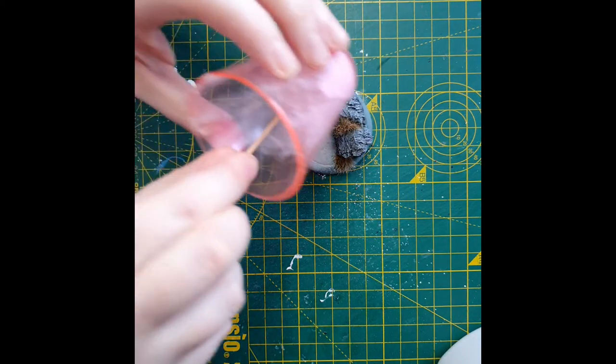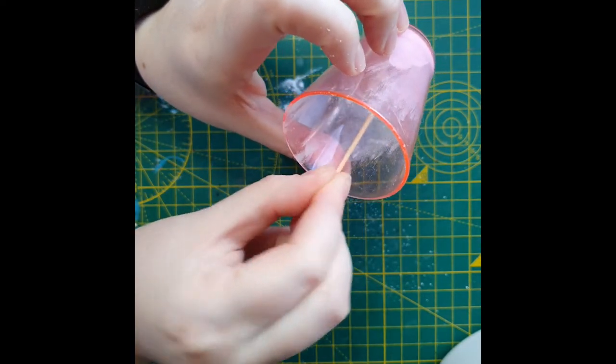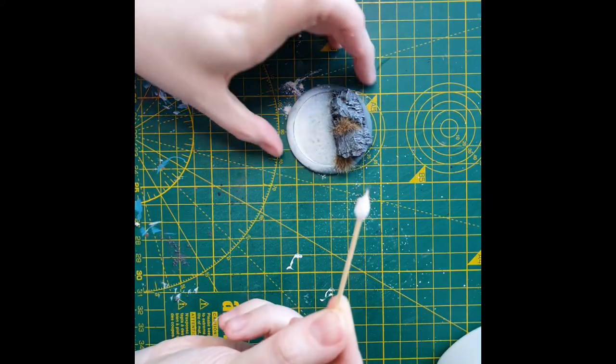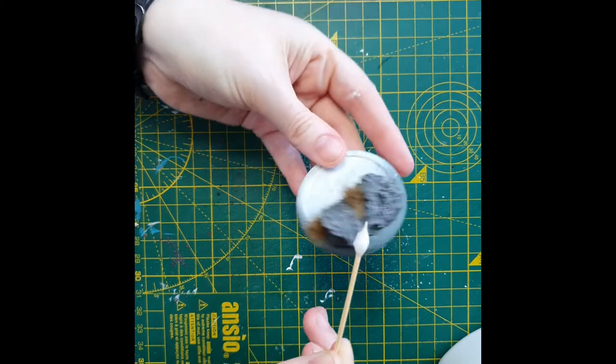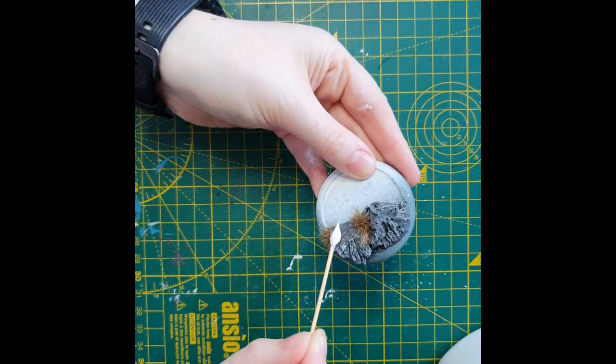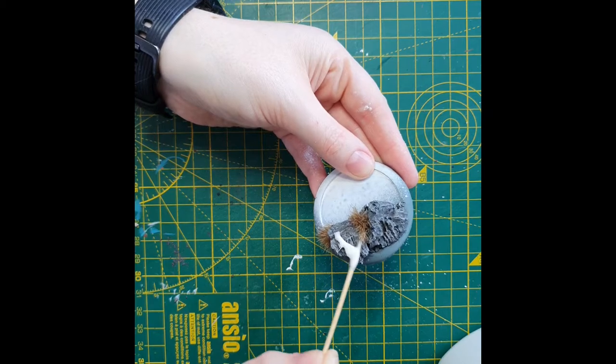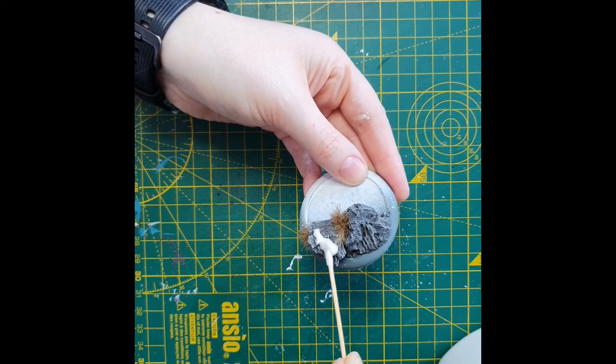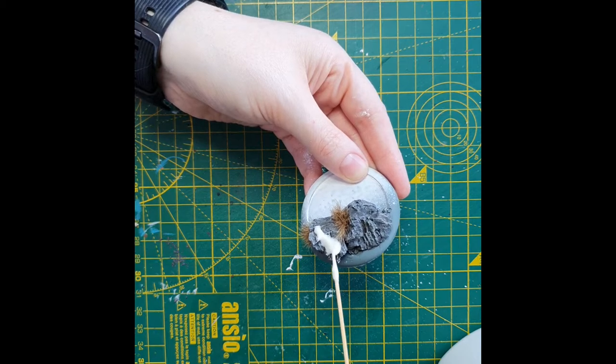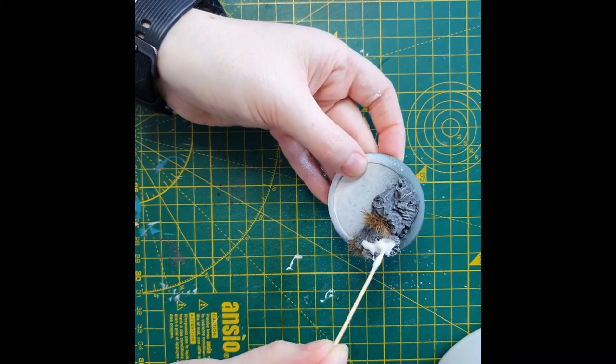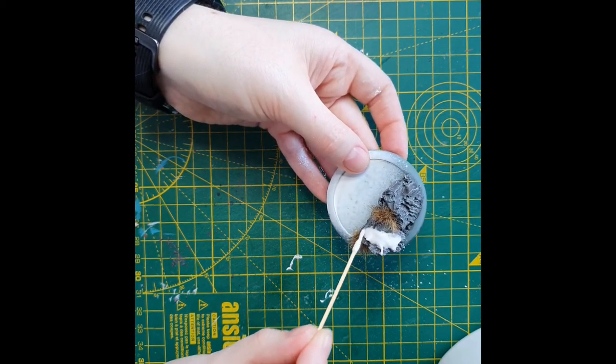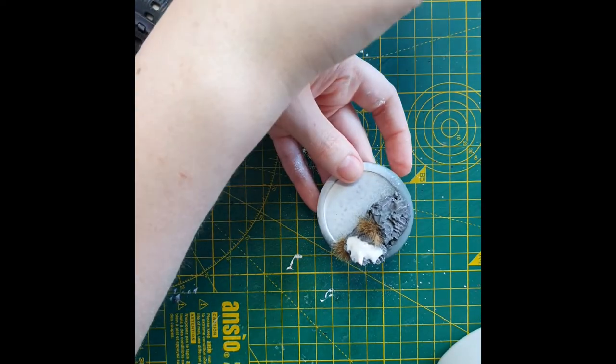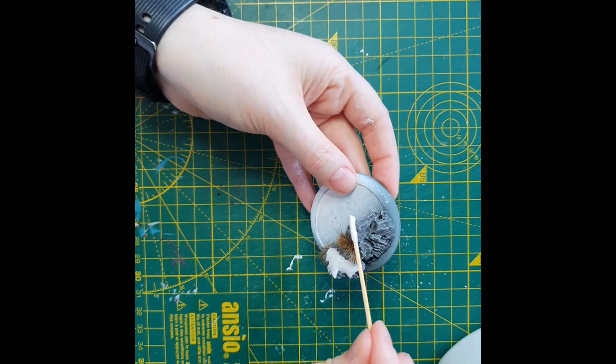So all you're going to do is take your toothpick, get a nice big dollop on there and you're just going to apply it onto the rocks and let it drip and fall naturally to begin with, but then you can start spreading it out until you get the desired effect and the desired coverage.